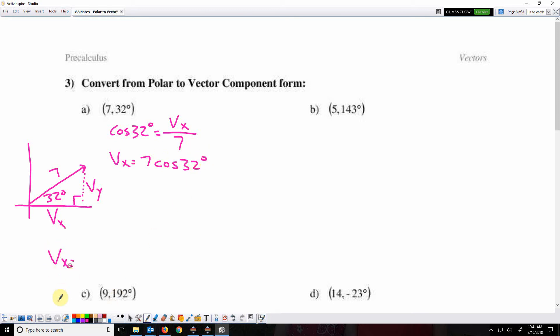And when I type that in my calculator, I'm trying to write that in component form. The vector's x component is 5.94.